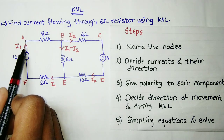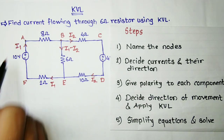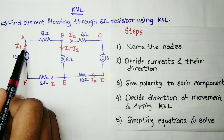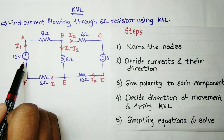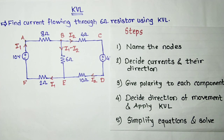One should note that the current going from a point must be coming back to that point. So the current I1 was going from this point, and the same current is coming back to this point. Therefore our KCL — Kirchhoff's Current Law — is satisfied.